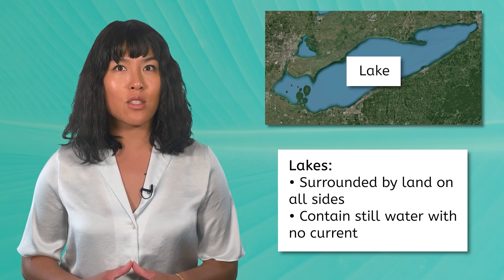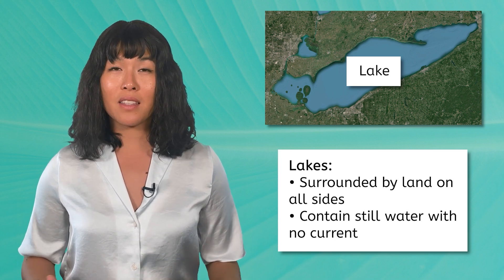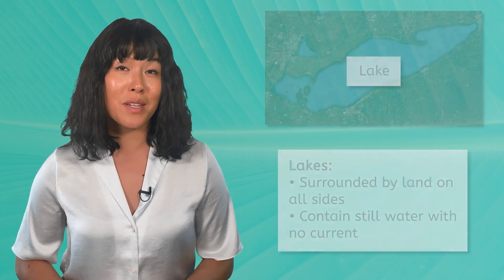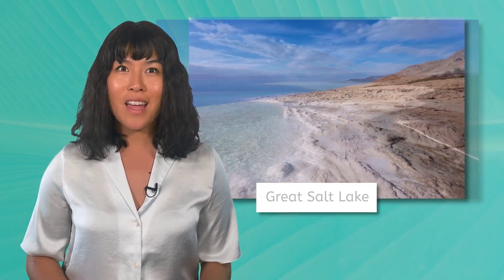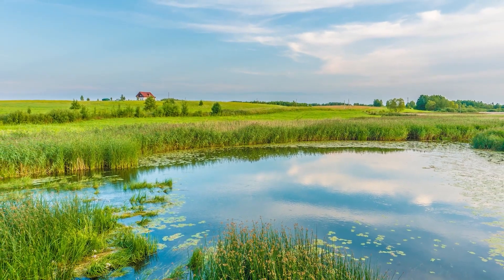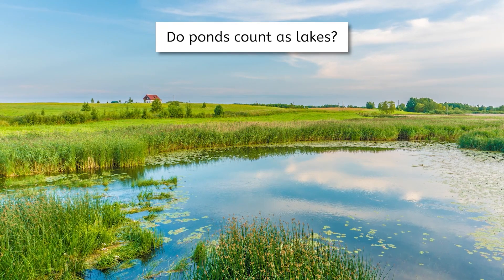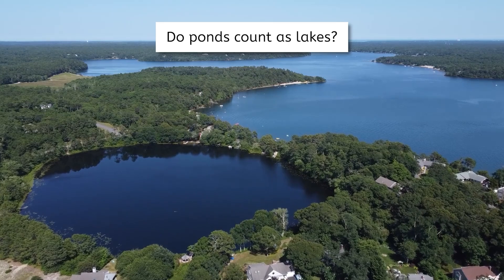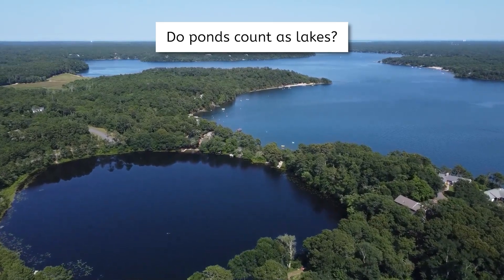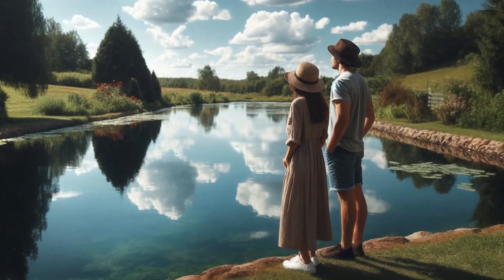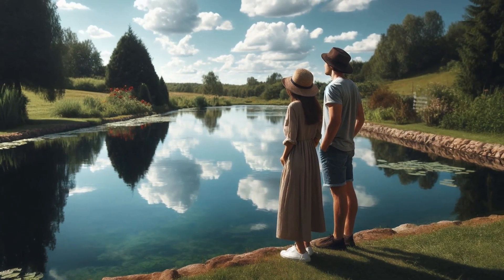But we also know that the oceans contain salt water. Does that mean that lakes can't have salt water? Not quite. While most lakes contain freshwater, there are a few exceptions, such as the Great Salt Lake in Utah and the Dead Sea between Jordan and Israel. Based on our defining characteristics, do you think that ponds count as lakes? They are surrounded by land and have no current. You might be surprised to learn that scientifically there is no clear distinction between ponds and lakes. We generally call smaller bodies of water ponds and larger bodies lakes, but ultimately it's a subjective decision.